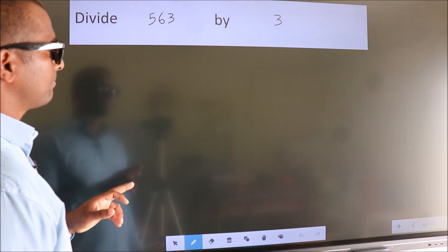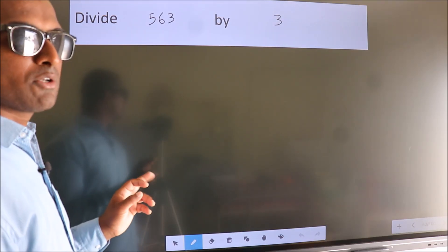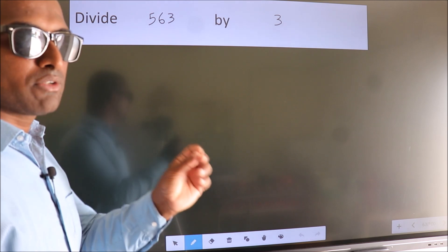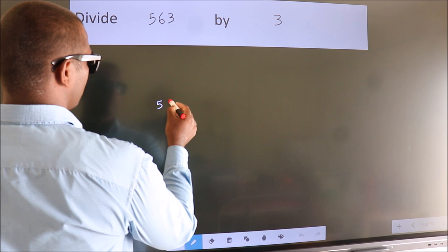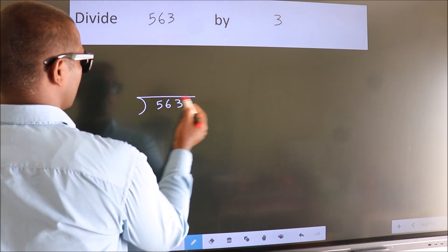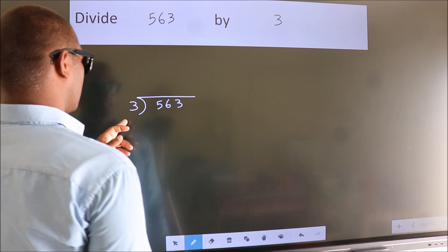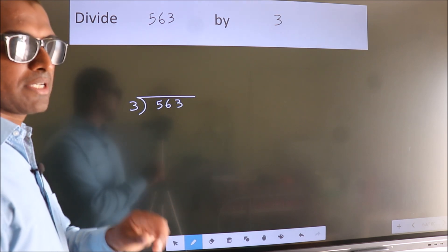Divide 563 by 3. To do this division, we should frame it in this way. 563 here, 3 here. This is your step 1.